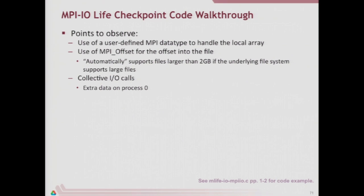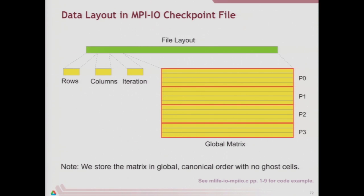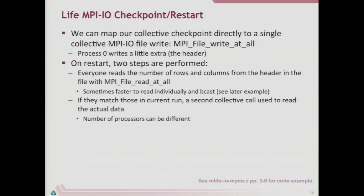Used to be that files larger than two gigabytes were a big deal. Process zero is going to take care of our header. When we define an API, we also have to define how we're going to store data in a file. The way we're going to store it is simple: an integer for rows, an integer for columns, an integer for iteration as the first three integers, then all our data in row-block order also as integers. That's a really terrible checkpoint format for Game of Life because we're using integers where we have single bits, but we're going to see that we can write the entire file with a single MPI_File_write_at_all from each process.